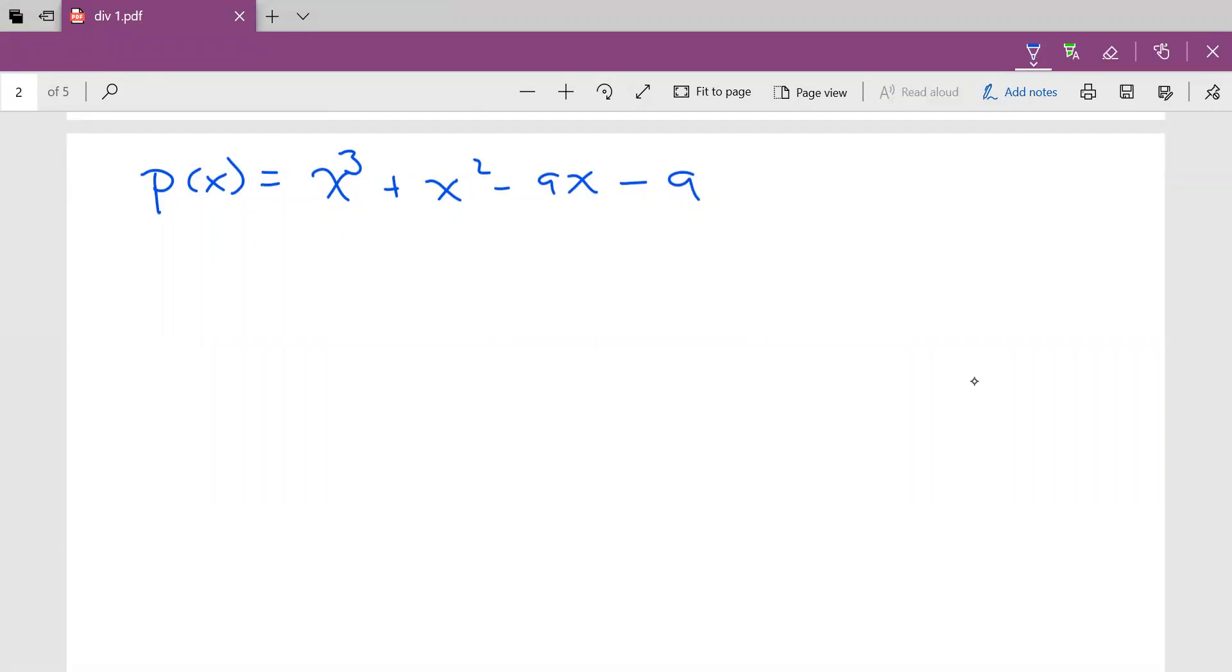So to do this, we're going to have to long divide. So what we're going to do is divide p(x) by the binomial x + 1.